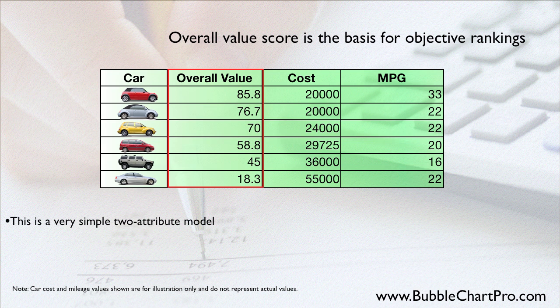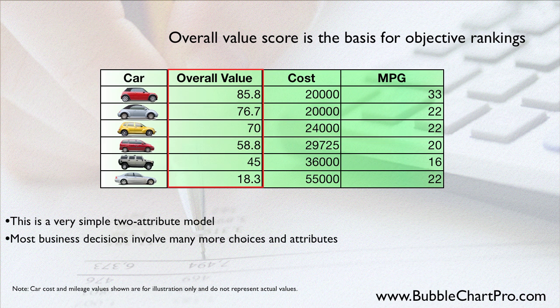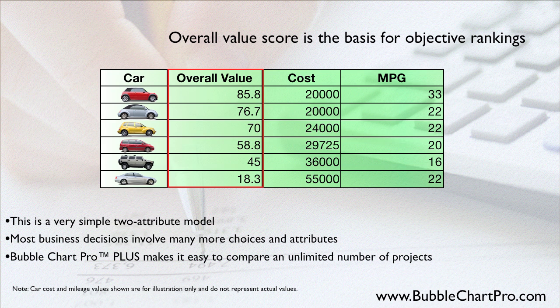In this simple example, using only two weighted attributes, you can see how BubbleChart Pro Plus would rank the cars based on only price and gas mileage. You can see that it ranked them in the same way that you would if you did it manually, that is, ranking first by cost and then by gas mileage. However, most business investment decisions involve many more choices and many more attributes. BubbleChart Pro Plus makes it easy to compare and rank virtually an unlimited number of choices using up to 100 different attributes.